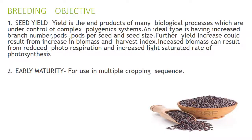Coming to breeding objectives in mustard: first and foremost is seed yield. Yield is the end product of many biological processes under control of complex polygenic systems. The ideal type has increased branch number, pods per plant, and seed size. Yield increase could result from increased biomass and harvest index; increased biomass can result from reduced photorespiration and increased light-saturated rate of photosynthesis. The second objective is early maturity for use in multiple cropping systems.